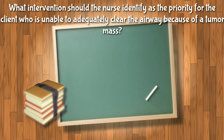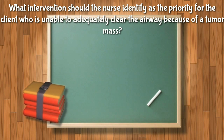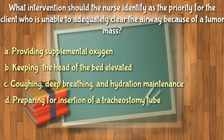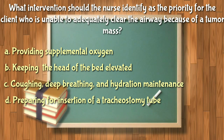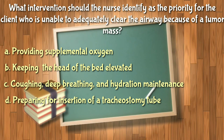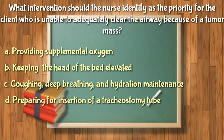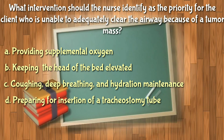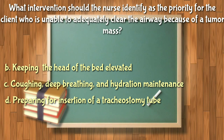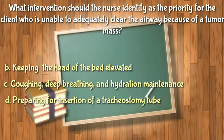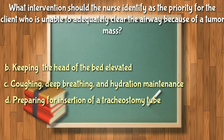Next question: What intervention should the nurse identify as priority for a client unable to adequately clear the airway because of a tumor mass? Provision of supplemental oxygen is important but is not related to the ability to clear secretions — if the airway is blocked, oxygen alone is ineffective, so letter A is wrong. Insertion of a tracheostomy is not a primary treatment to maintain airway clearance, so letter D is not the priority.